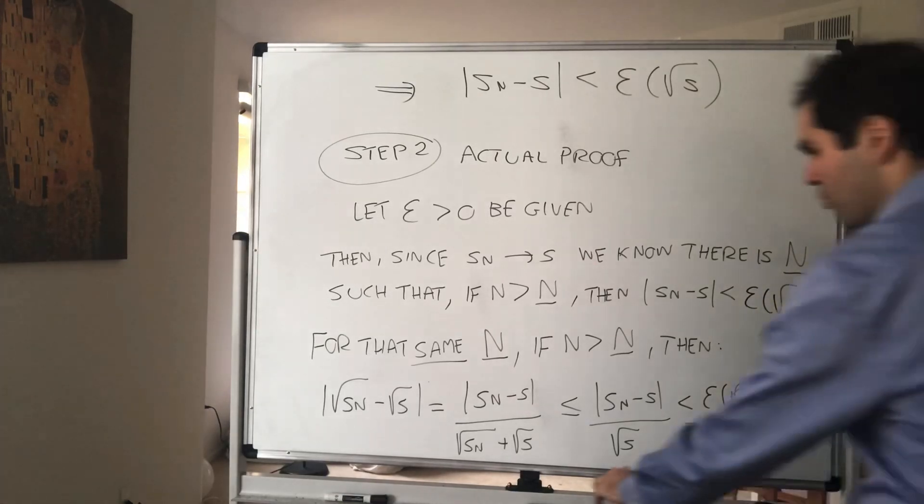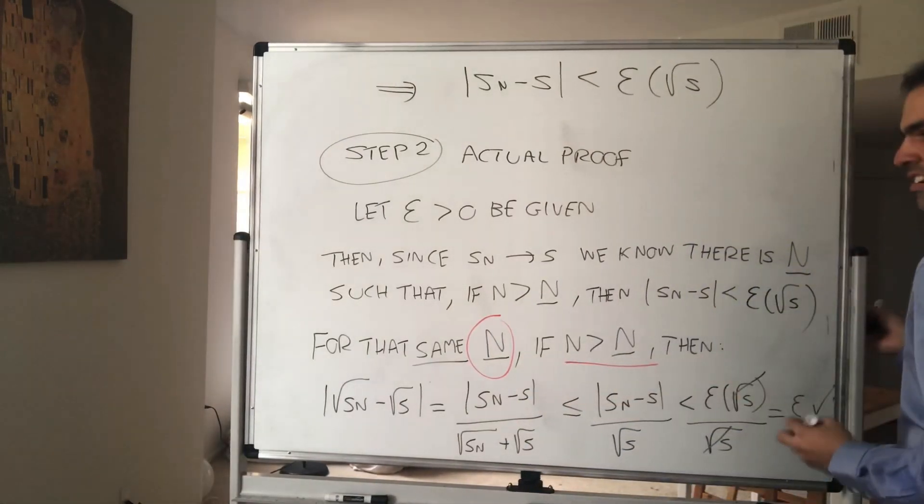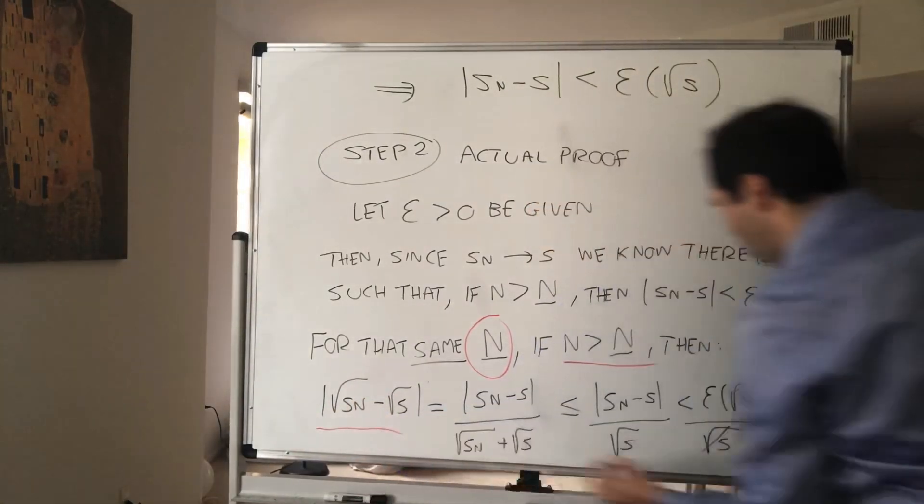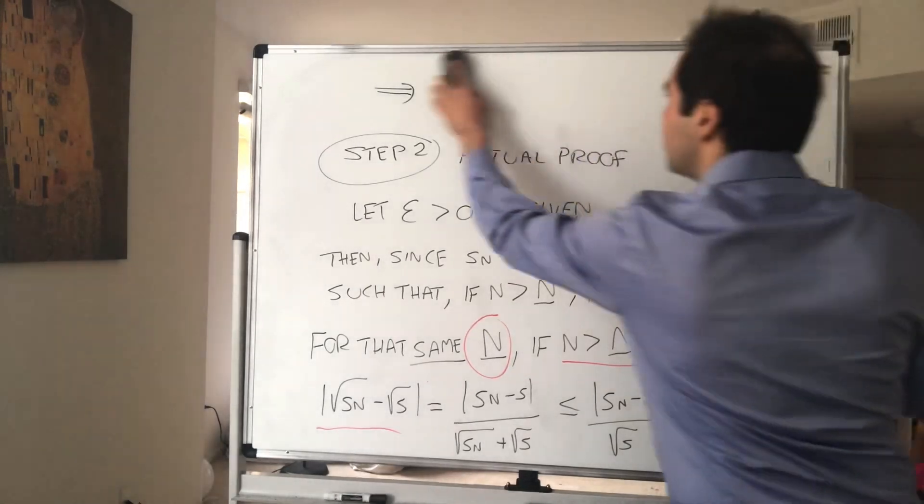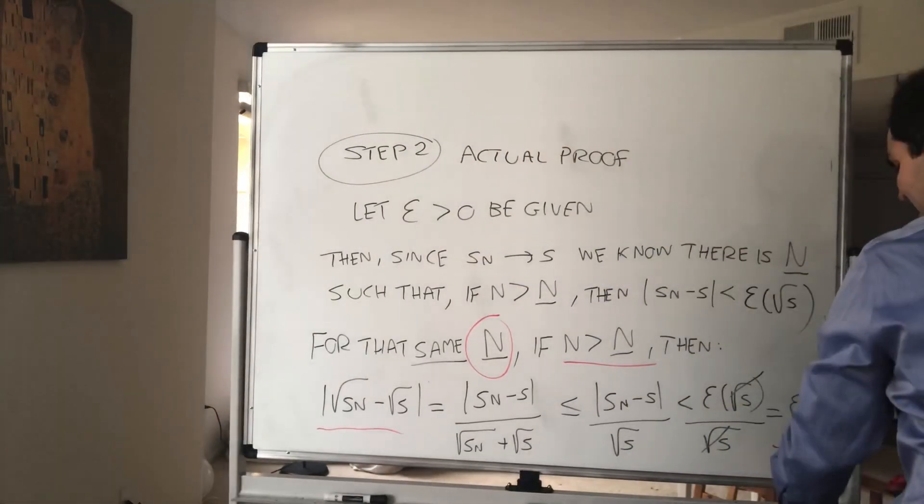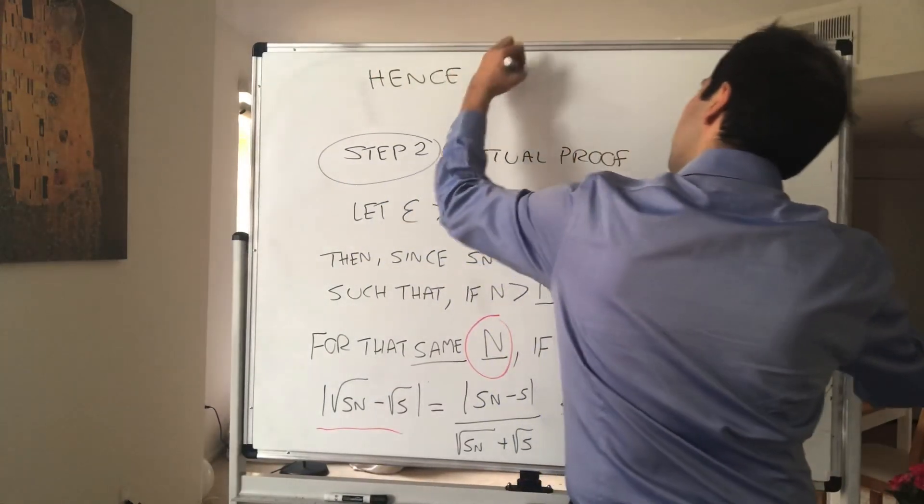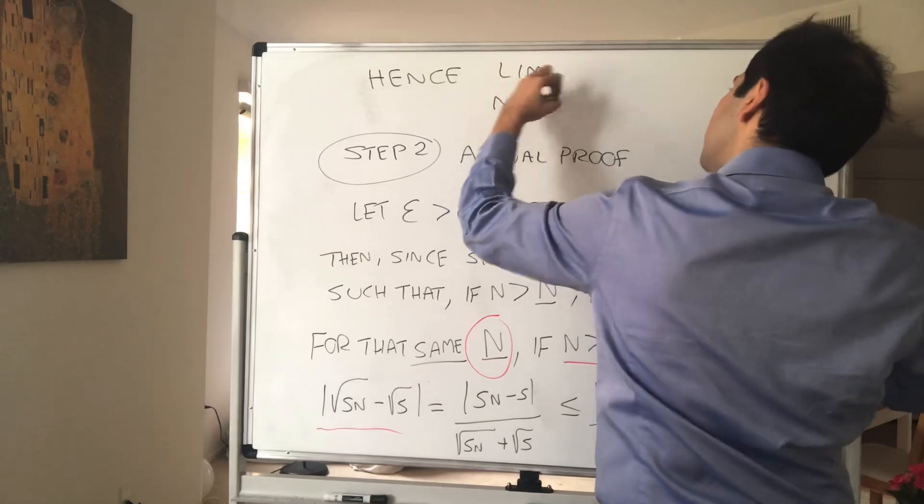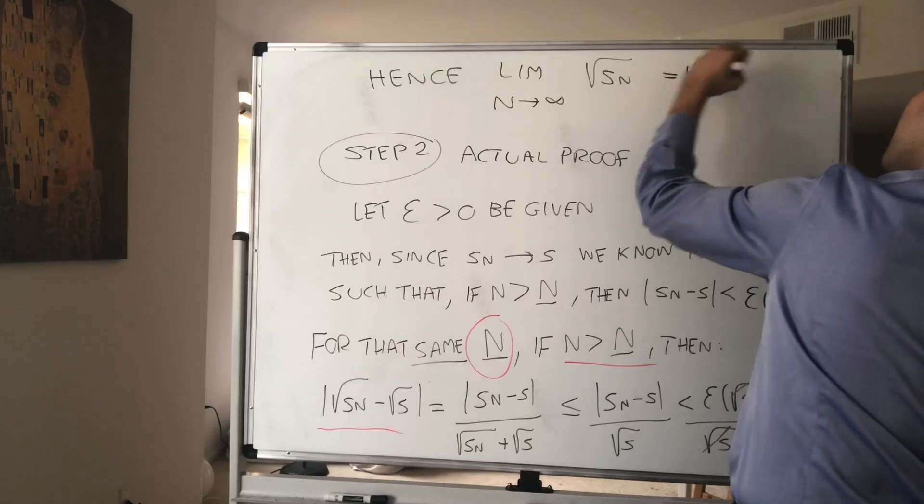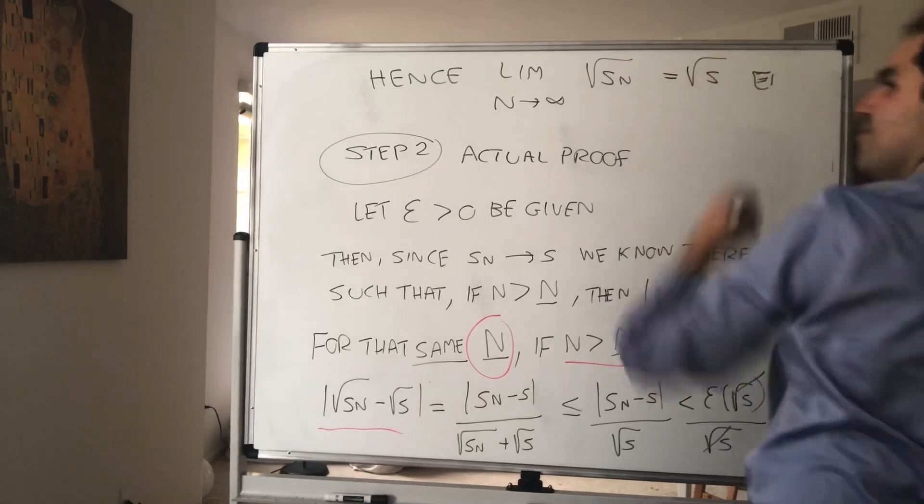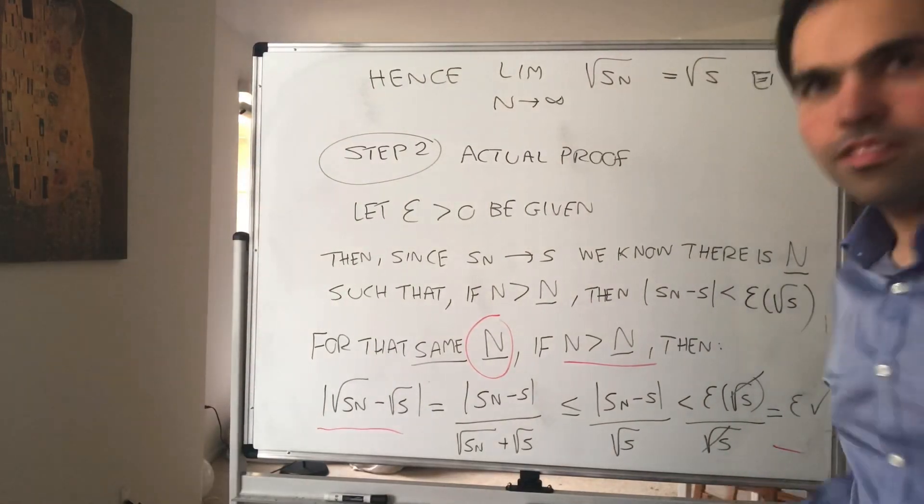So in other words, there is some N such that if n is greater than N, then this quantity is less than epsilon. Therefore, we can conclude that square root of Sn goes to square root of s. The limit as N goes to infinity of square root of Sn equals square root of s. Ta-da, and that's it.